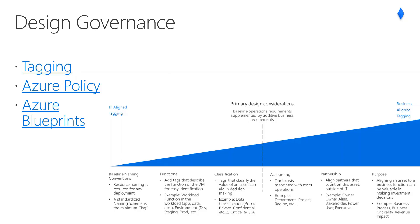Azure Blueprints are a declarative way to orchestrate the deployment of various resource templates and other artifacts such as role assignments, policy assignments, Azure Resource Management or ARM templates, and resource groups. The Azure Blueprints service is backed by the globally distributed Azure Cosmos DB, and blueprint objects are replicated to multiple Azure regions. At the bottom of this link is an Azure Friday video overview of Azure Blueprints — be sure to check this video out and the web link as well.